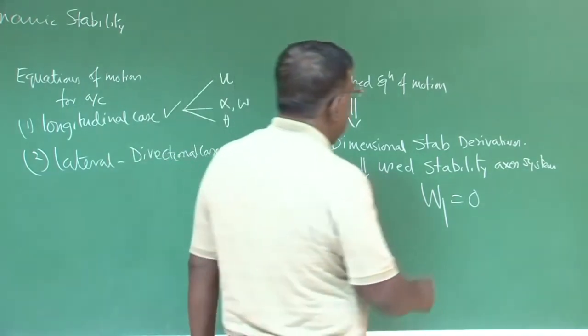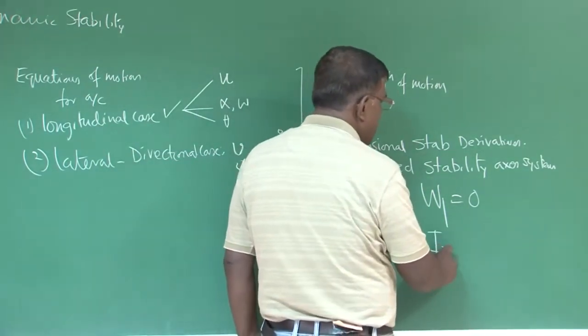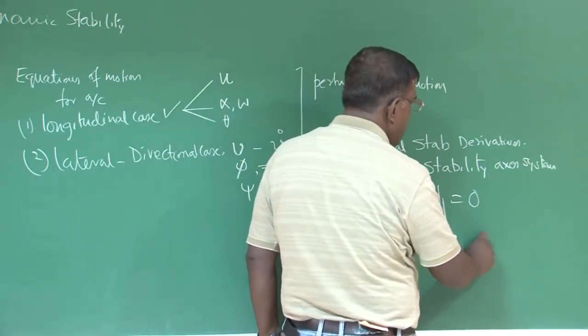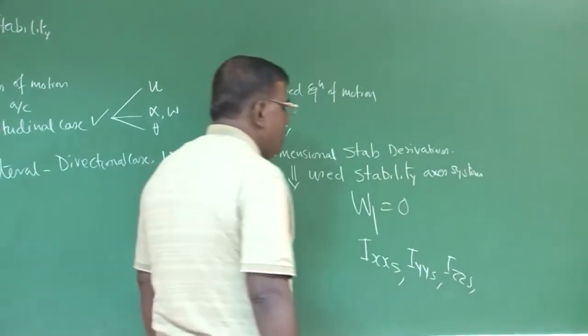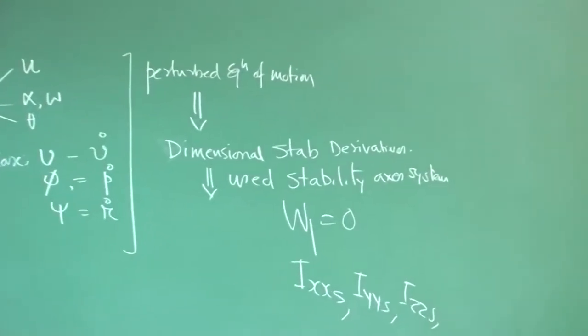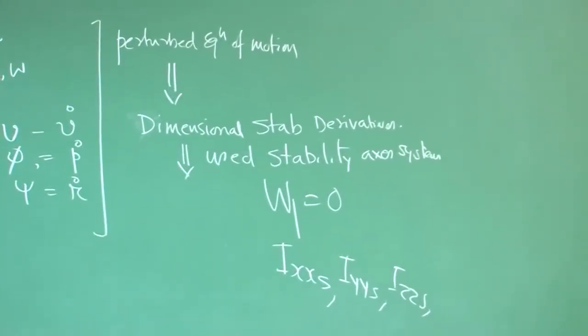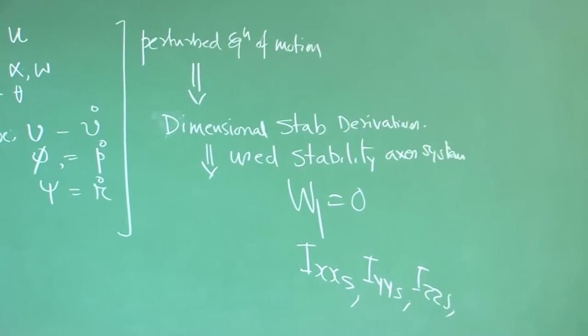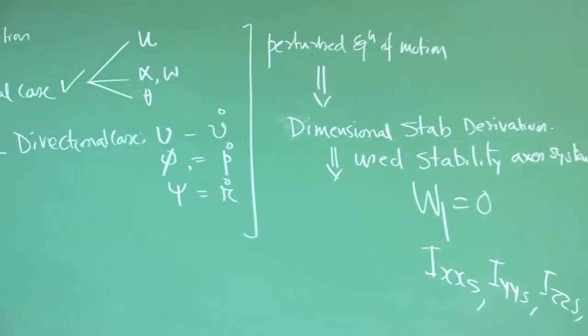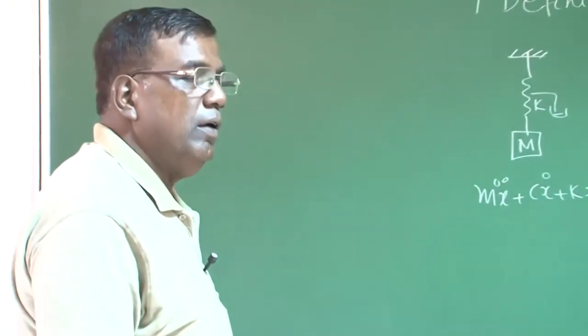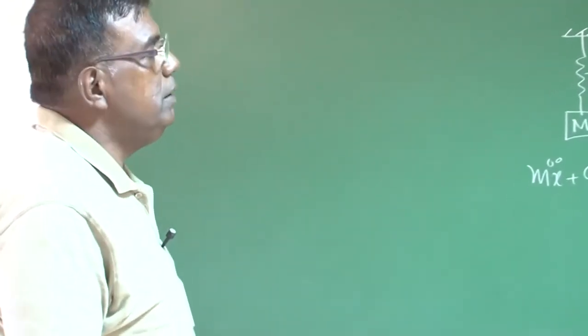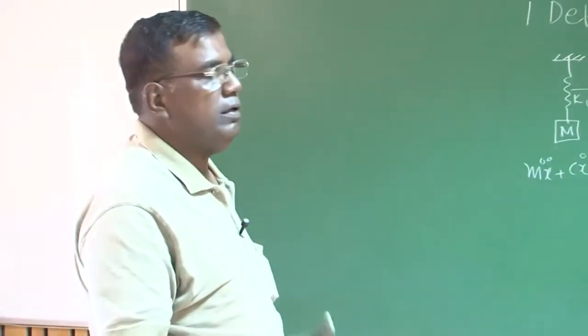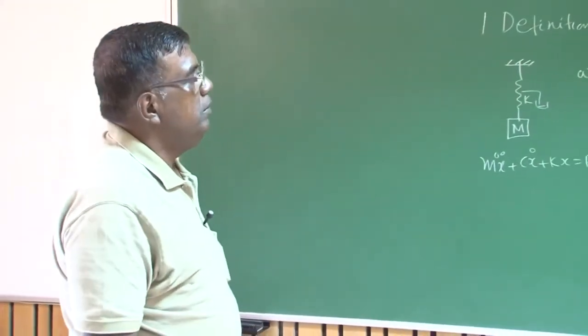But same time, we know the moment we use stability axis system, then I must also try to find out i_xx, i_yy, i_zz or cross moment of inertia about the stability axis system. And we have shown for 3 to 4 degrees angle of attack, how much variation it can have. So as a preliminary study, one may even neglect it. But there is no need to neglect it, just you have to apply one transformation, you will get this number.